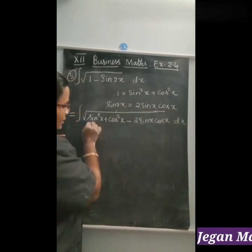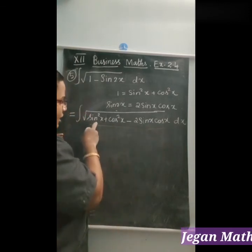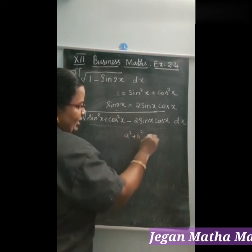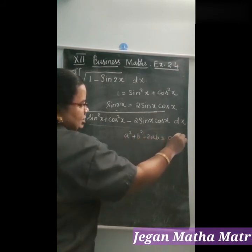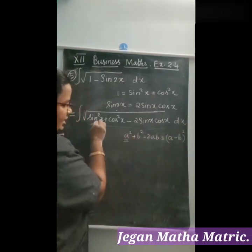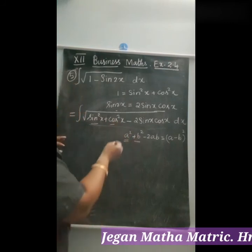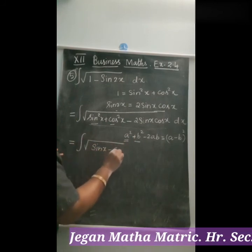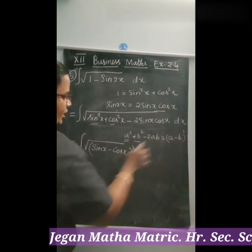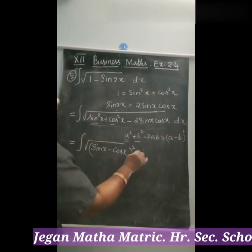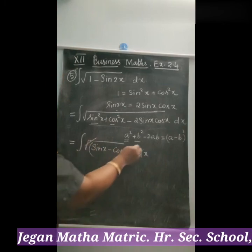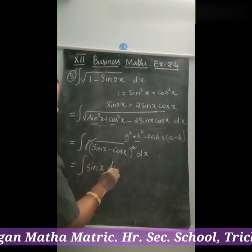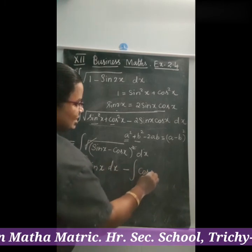Recognizing the pattern a² plus b² minus 2ab equals (a minus b)², where a equals sin x and b equals cos x, the expression becomes integral of root of (sin x minus cos x)² dx. The root and square cancel, giving integral of (sin x minus cos x) dx, which splits into integral of sin x dx minus integral of cos x dx.